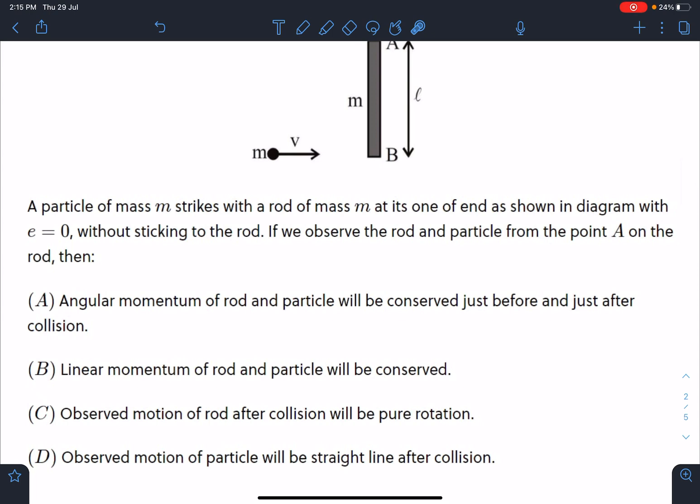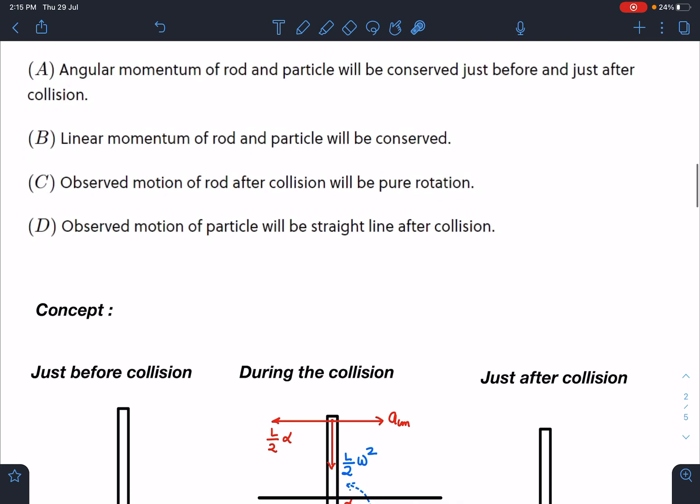Then we have to verify these four options which are given: angular momentum of rod and particle will be conserved just before and just after collision; option B is linear momentum of rod and particle will be conserved; option C is observed motion of rod after collision will be pure rotation; and D is observed motion of particle will be straight line after the collision.